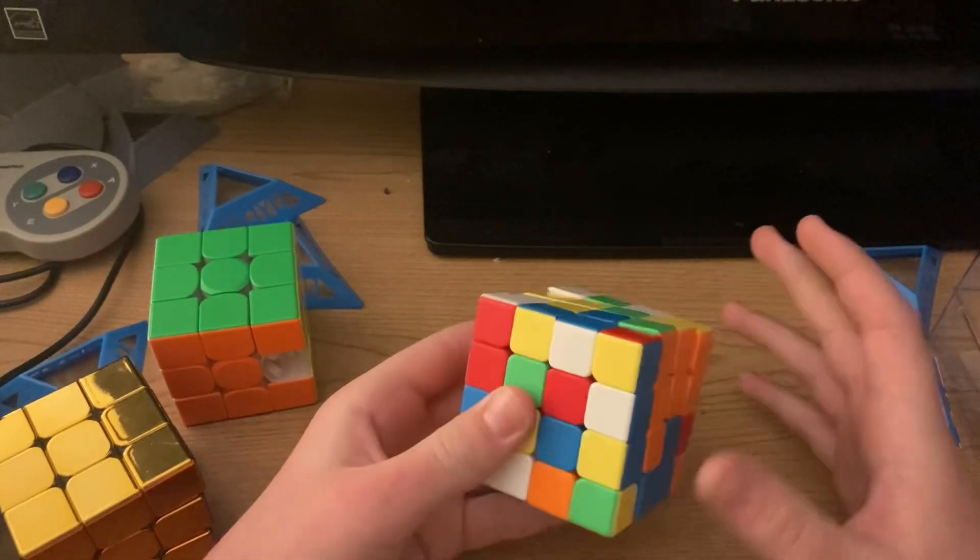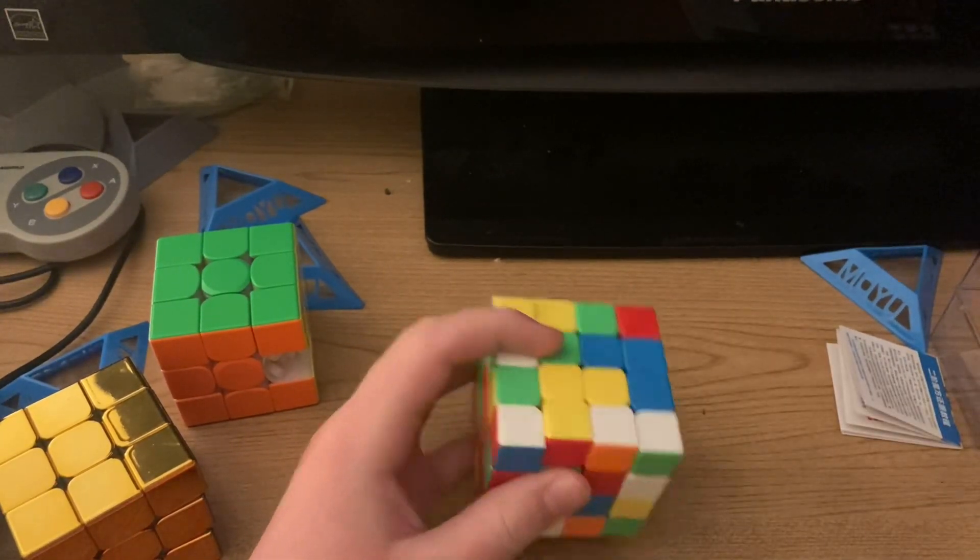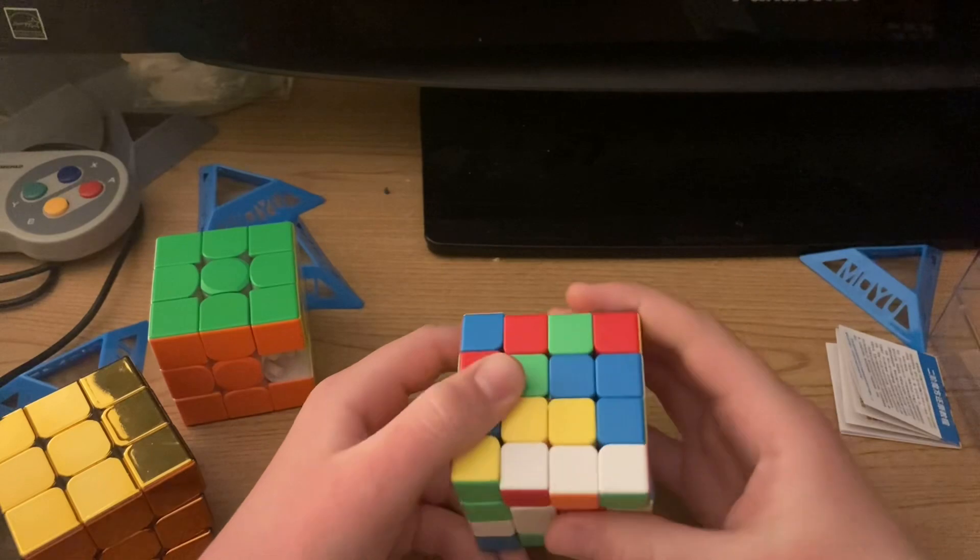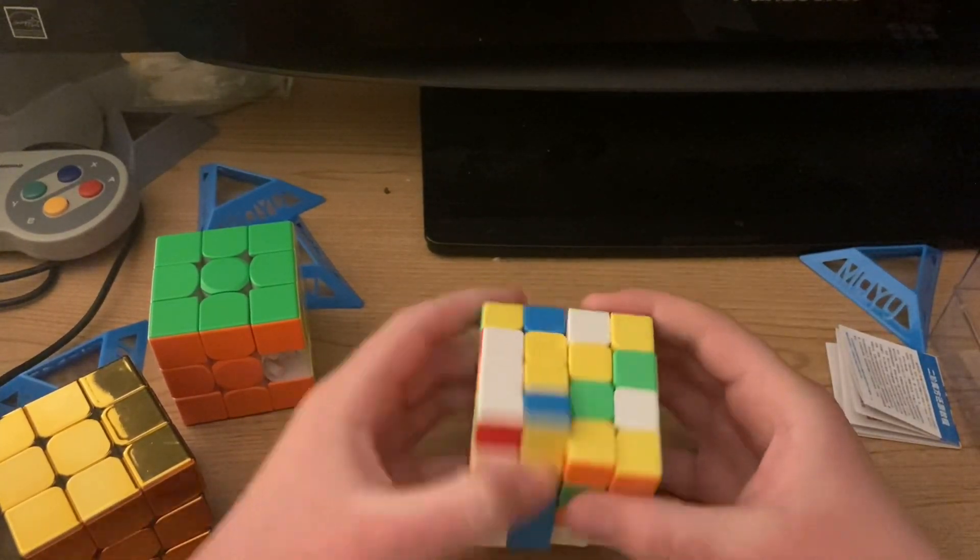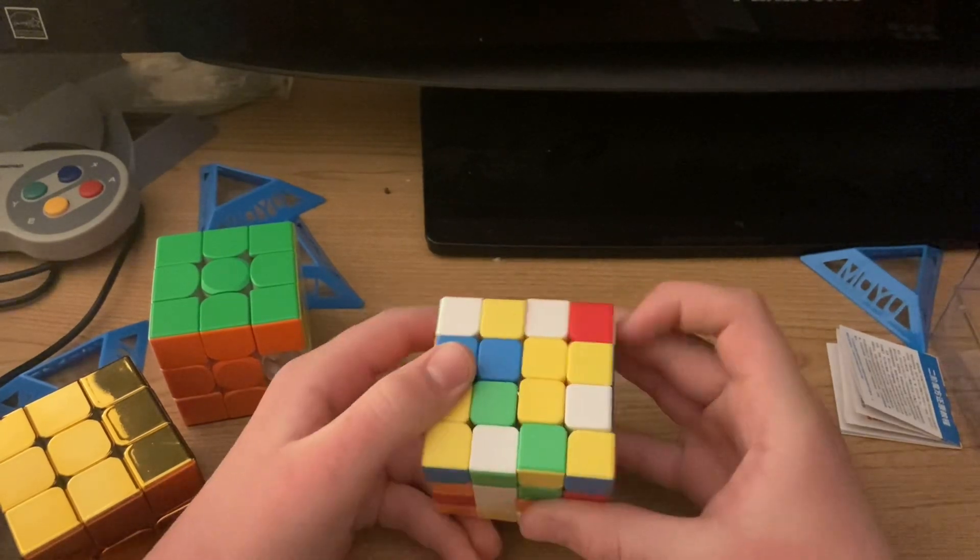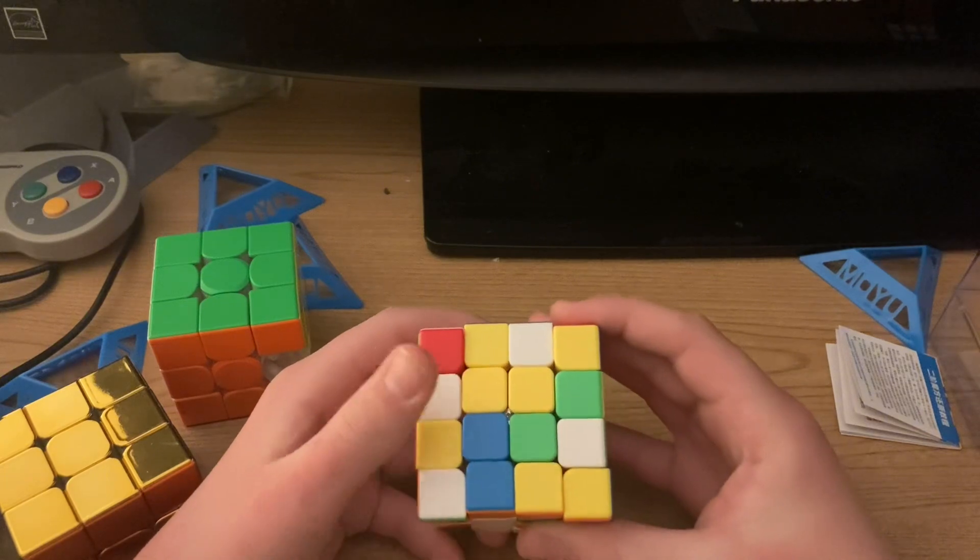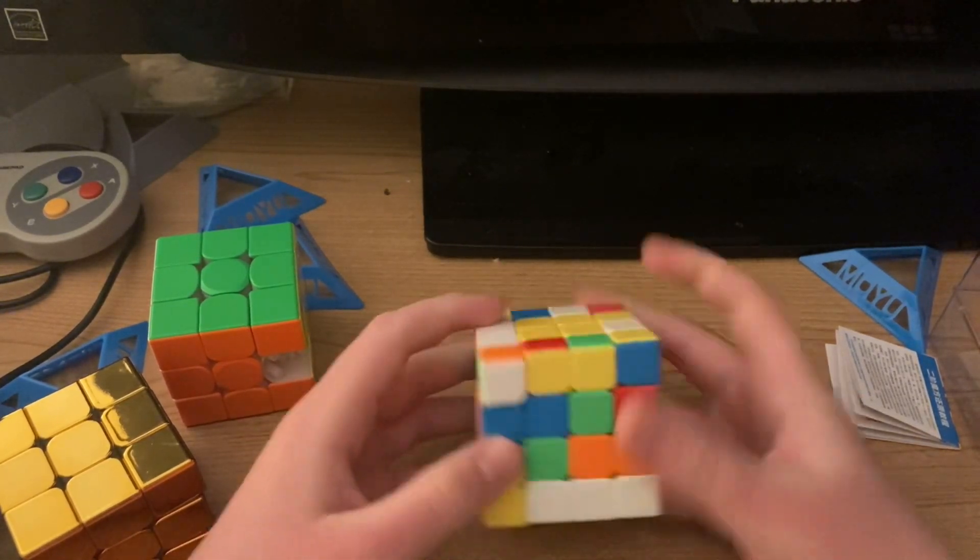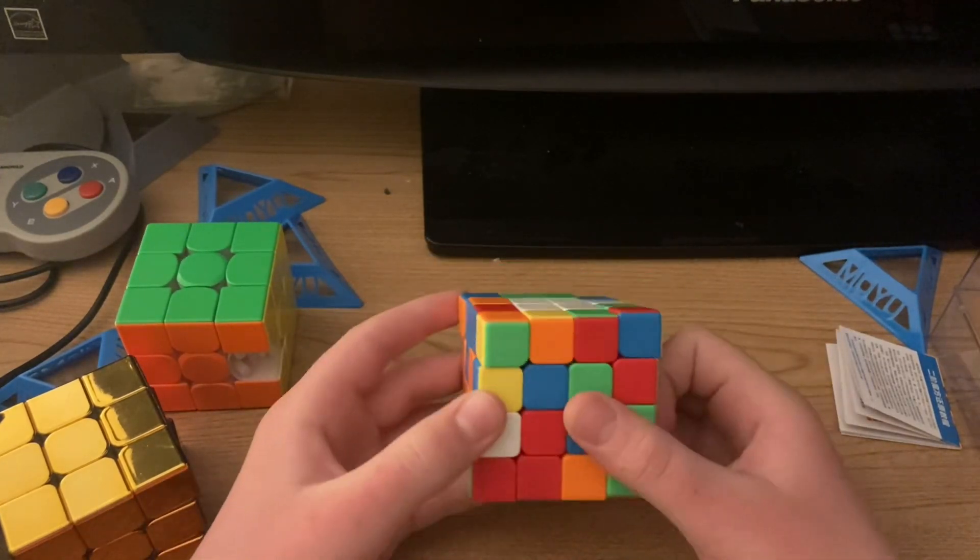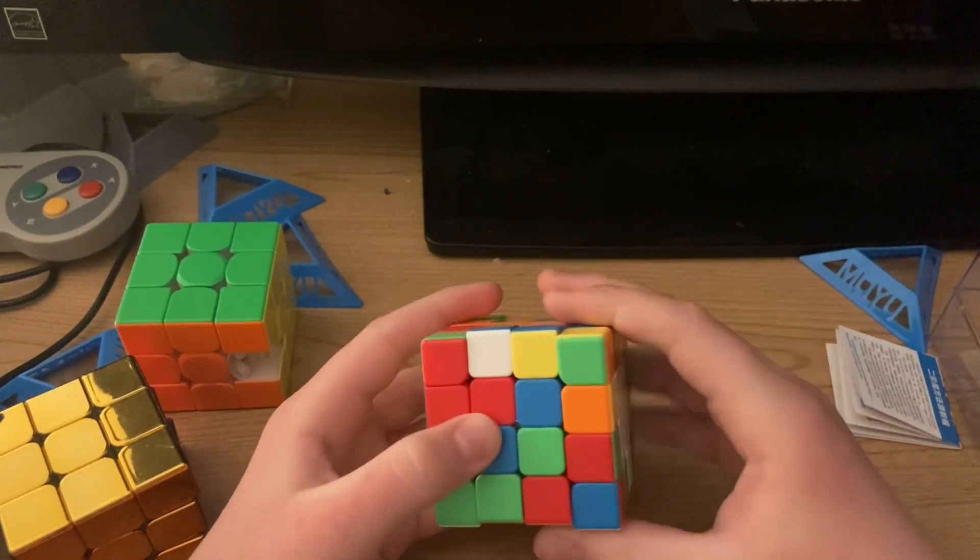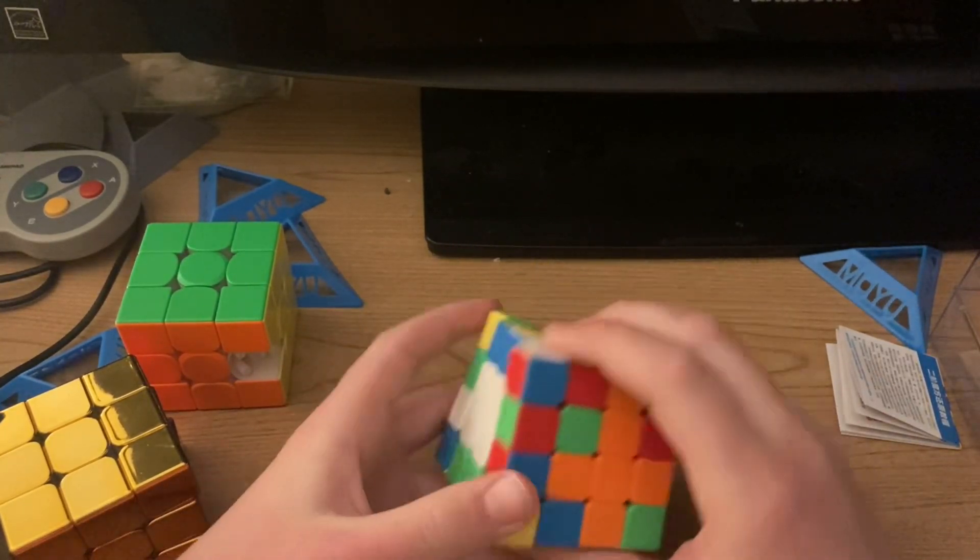Next will be more difficult because there's already a center formed, which means we're going to have to build this without destroying the other center. You're going to make the bar, make the bar, and then insert. Make it a bar, pull it down, and then bam. I usually start with the blue side here.